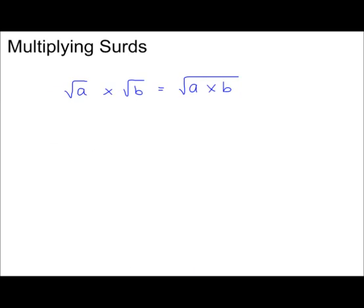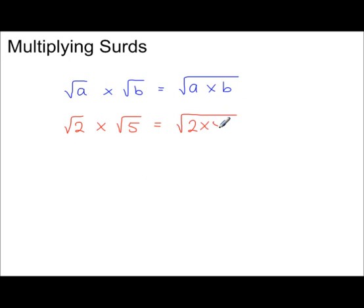Multiplying surds. The square root of a times the square root of b gives you the square root of a times b — you're square-rooting the product of a and b. For example, the square root of 2 times the square root of 5 equals the square root of 10. If it can be simplified, you must do that step.